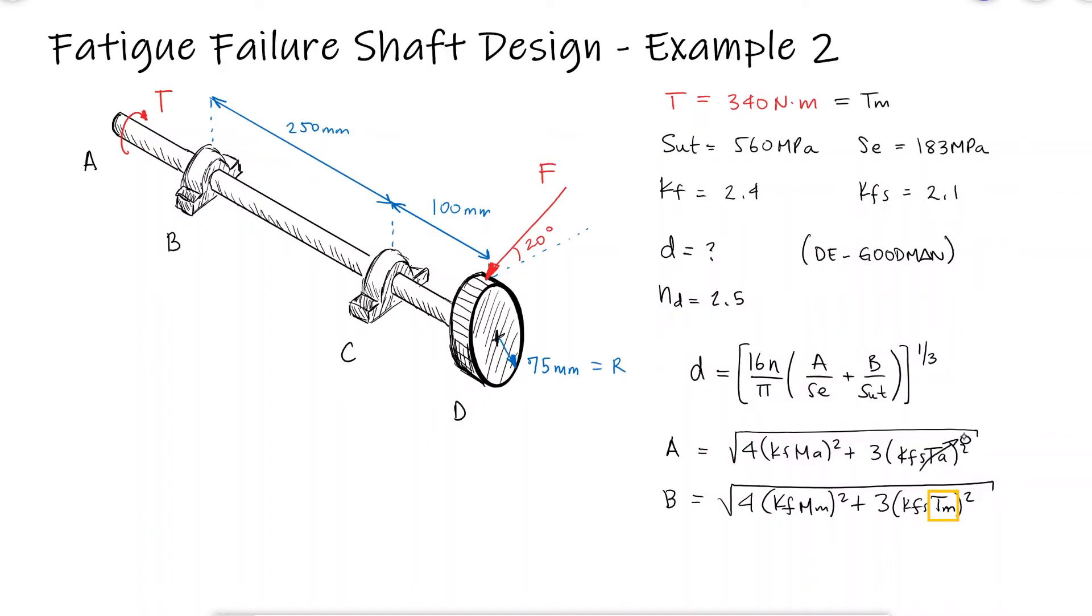The moment, just like in the previous example, will vary from a positive to a negative value for any point that is located on the surface of the shaft. This means that the mean moment, or average moment, is zero. The only term that we're missing is that alternating moment.